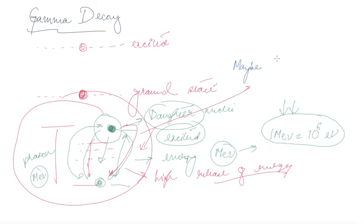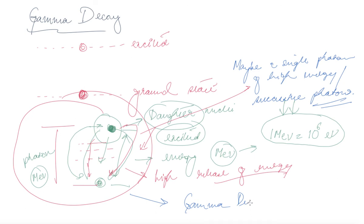This may be a single photon of high energy or successive photons. These are the two possibilities that take place and this whole process is known as gamma decay.